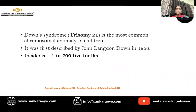Down syndrome, it's a trisomy 21, is the most common chromosomal anomaly in children. It was first described by John Landon Down in 1866. The incidence is found to be 1 in 700 live births.